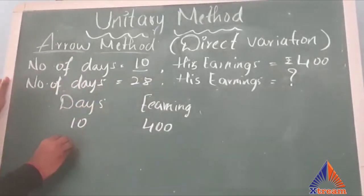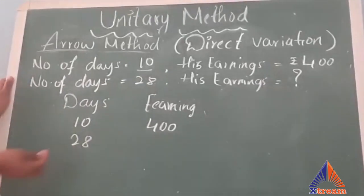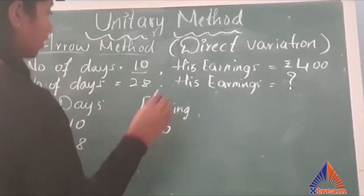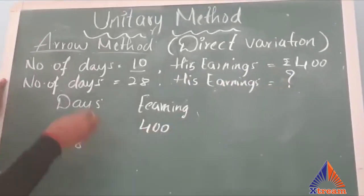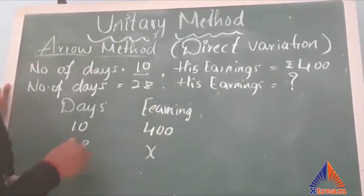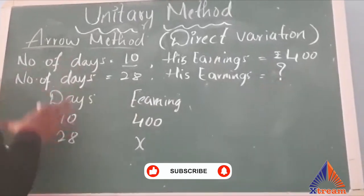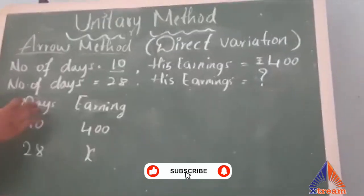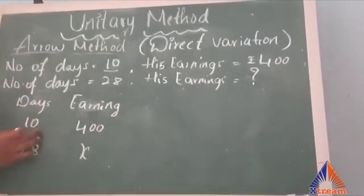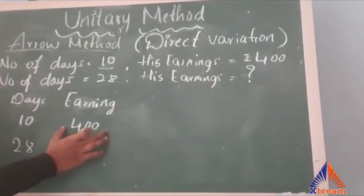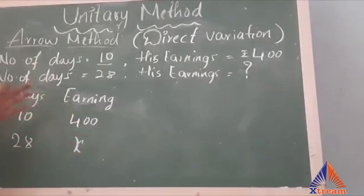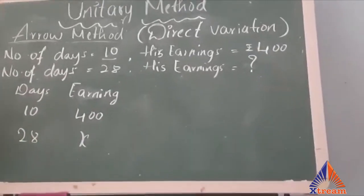The number of days in the second row is 28, and we need to find his earnings for 28 days — so we write that as x, since we don't know its value. This completes the first step in the arrow method: forming the columns. For 10 days a man earns 400, and for 28 days it is x.